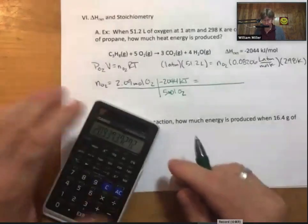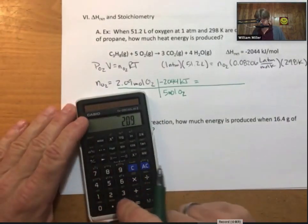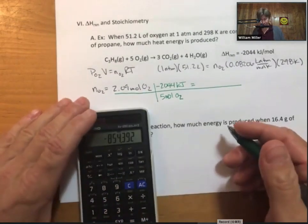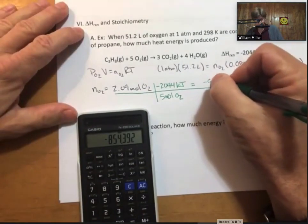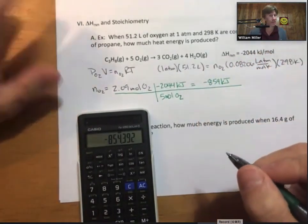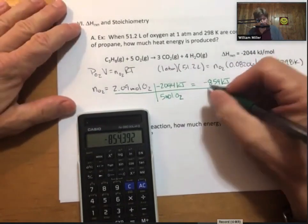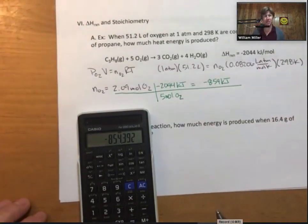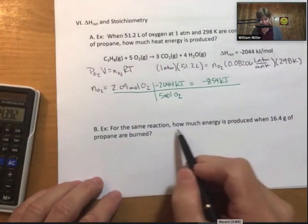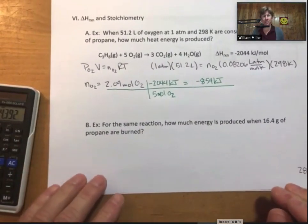That's an equal sign. I get negative 854 kilojoules. And that's just energy. That's an amount of heat energy. That's like a Q. And the negative part tells you that it's produced. Now, for the same reaction, how much energy is produced when 16.4 grams of propane are burned.